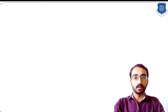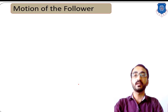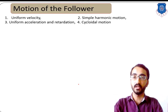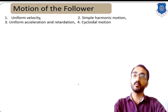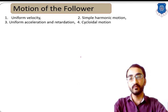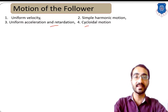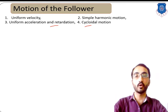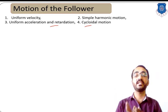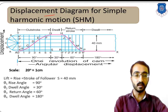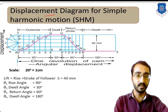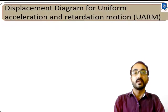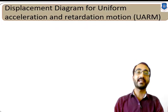In the previous session, we learned about various types of motion of the follower — either uniform velocity, simple harmonic motion, uniform acceleration and retardation, and cycloidal motion. Based on this motion of the follower, we have to plot different displacement diagrams. Now let's learn the third type of motion, which is uniform acceleration and retardation.